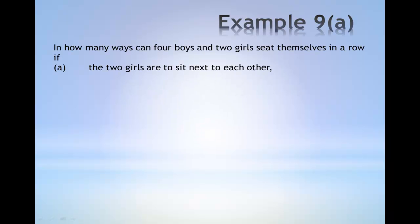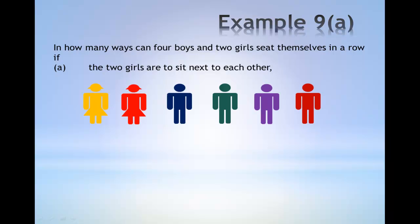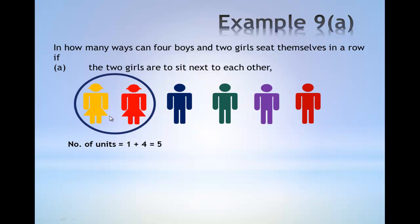Example 9. In how many ways can four boys and two girls sit themselves in a row if the two girls are to sit next to each other? For the two girls to be sitting next to each other, they are to be grouped into one unit. The total number of units will be given by a group of two girls and four units of boys, which gives a total of five units.